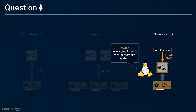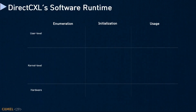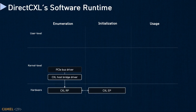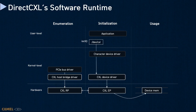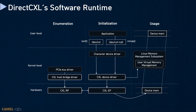To expose CXL-attached memory space to users, we leverage the Linux memory management system. The software runtime of DirectCXL consists of an enumeration phase, initialization phase, and usage phase. When the Linux PCI bus driver performs enumeration, our CXL host bridge driver discovers CXL memory devices. Remote memory of each device is mapped to the system so the CPU can issue memory requests to it. Our CXL memory device driver is loaded after enumeration and exposes a character device to interact with user-level applications. Users can create a namespace through IOControl and perform mmap on the namespace device to use the CXL-attached memory space. The mmap handler maps the physical address of remote memory into the user's virtual address space, so the user can issue load/store instructions to access CXL-attached remote memory.